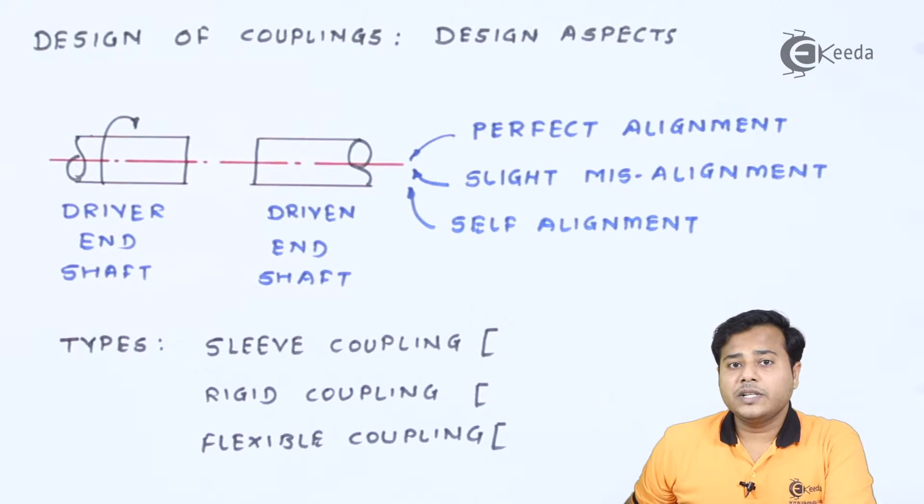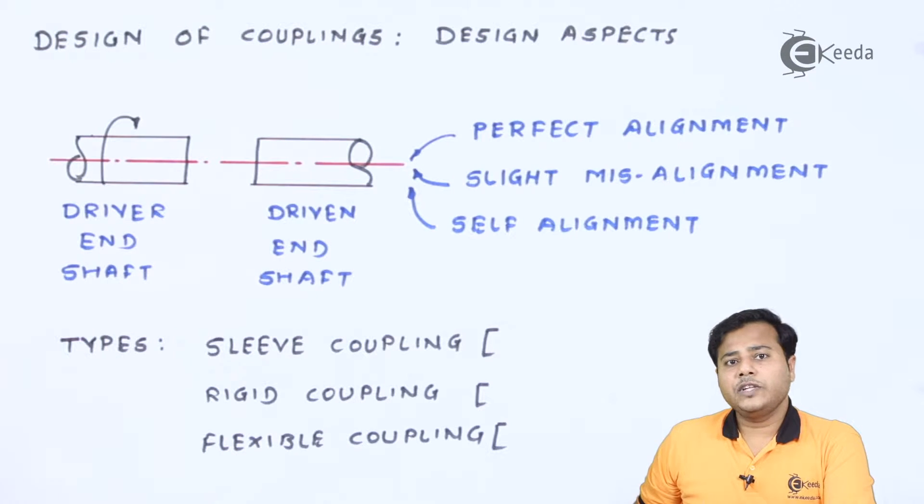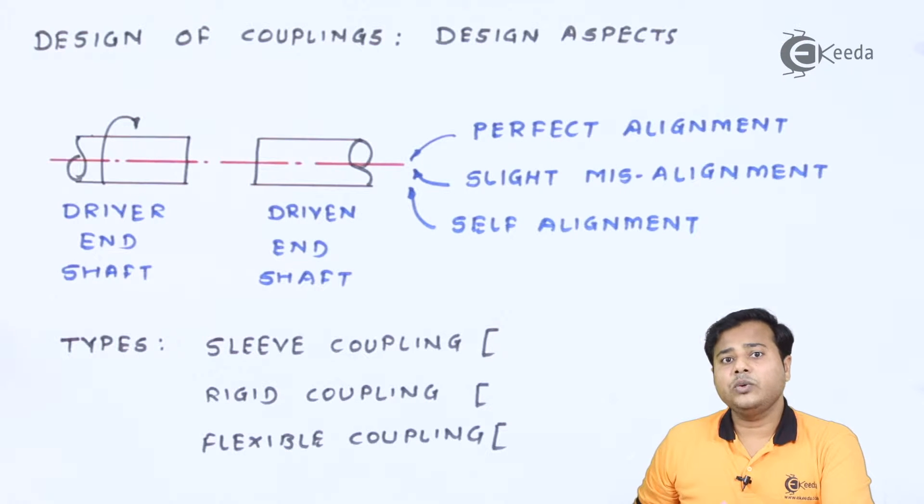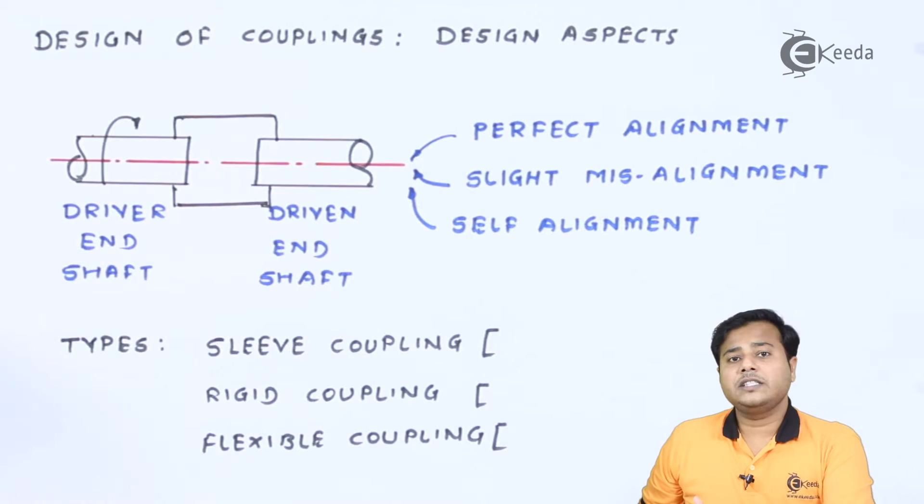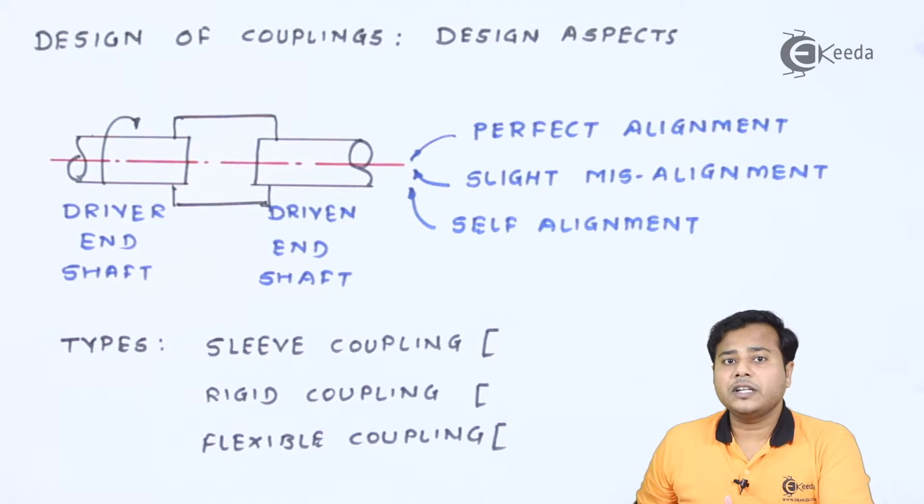So students, as you can see on the screen, I have shown some schematic. Let us try to understand it. Now we know that for power transmission, we use various shafts. Let us say there are two shafts: one is the driver-end shaft, another is the driven-end shaft. Now since there is some distance apart from them, we need to connect them by means.